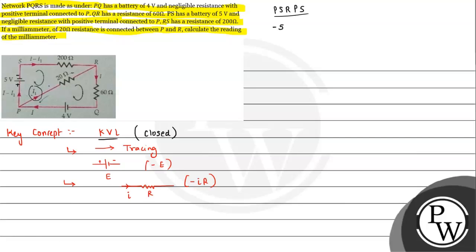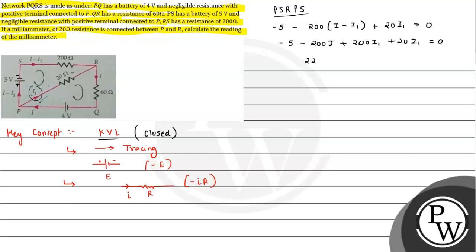Then moving from S to R, the current is I minus I1, and our tracing direction is the same, so we write minus 200 times (I minus I1). Then moving from R to P, the current direction is opposite to tracing direction, so it will be plus 20 I1. That equals 0. Simplifying: minus 5, minus 200I plus 200I1, plus 20I1 equals 0. So 220 I1 minus 200 I equals 5. This is expression number 1.